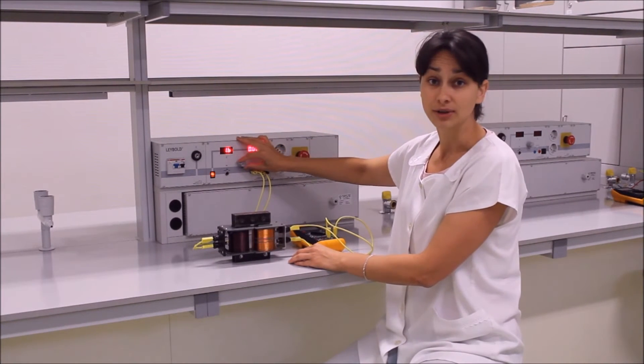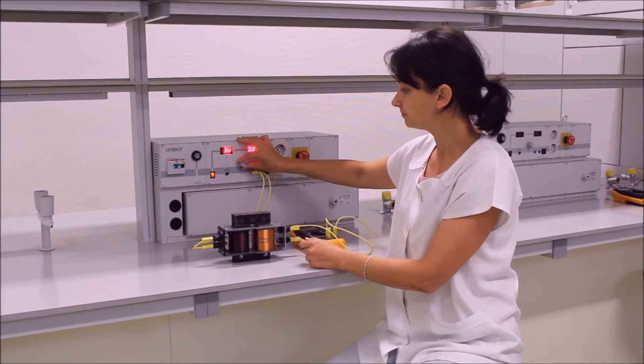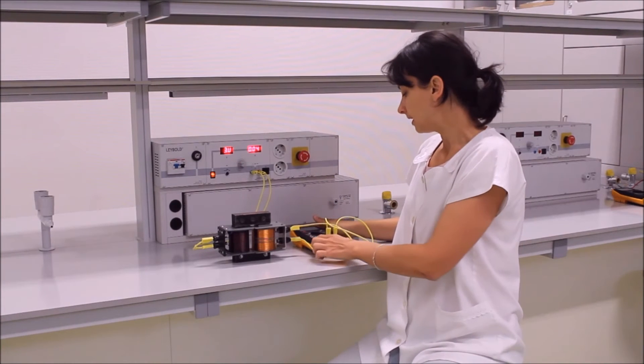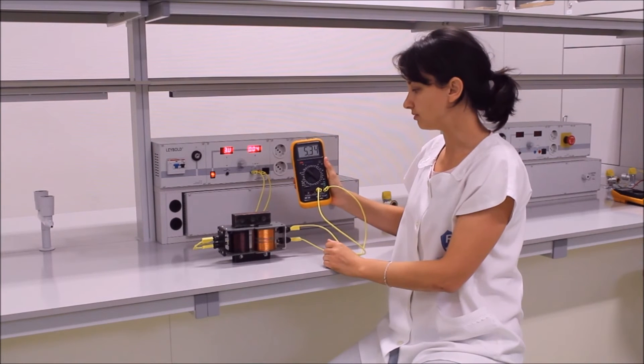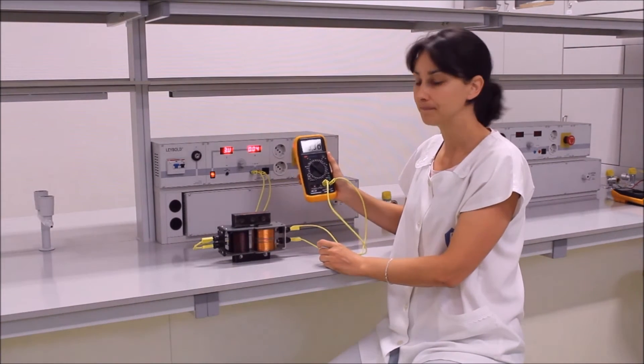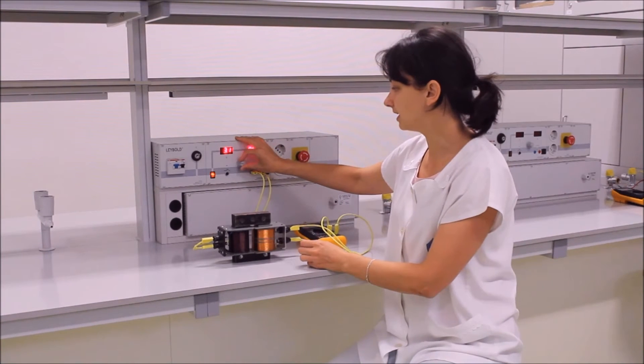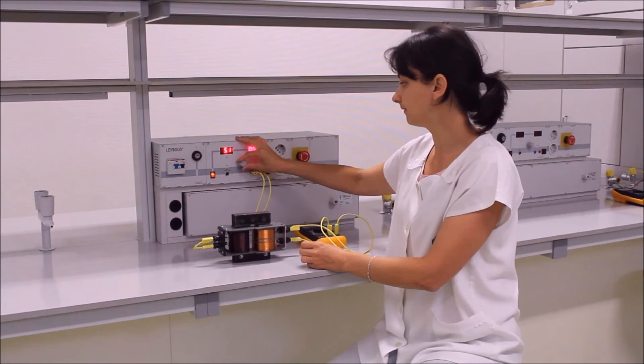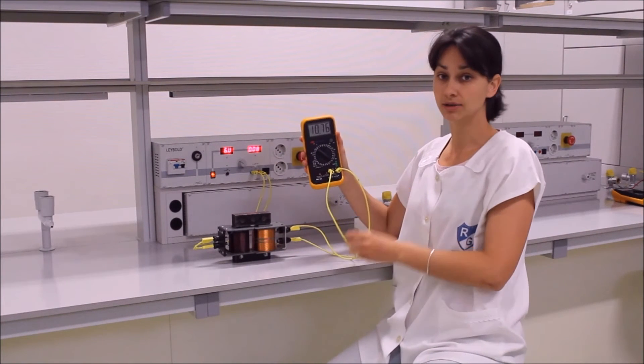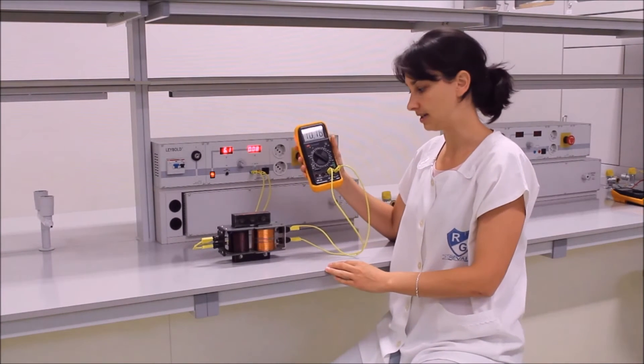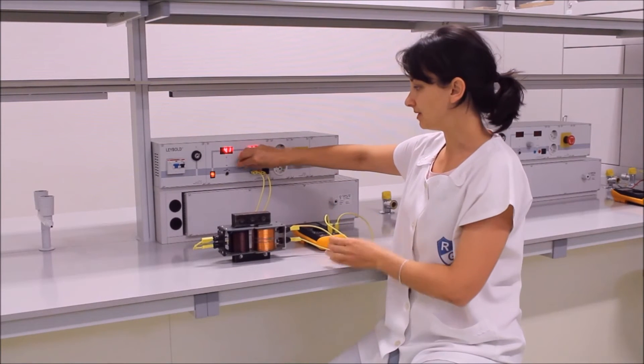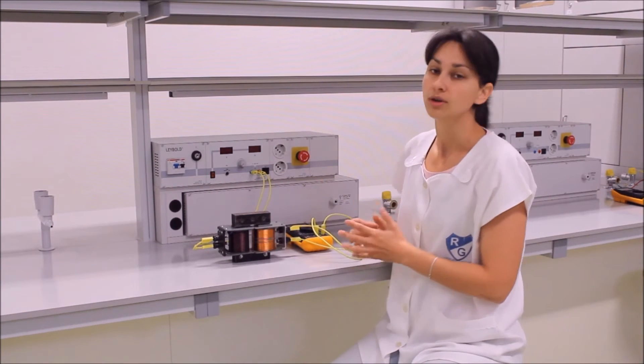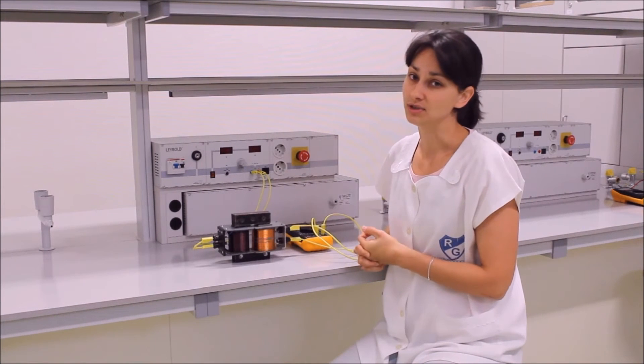A kijelző látható, a primer tekercsre kapcsolt feszültség nagysága 3,3 volt, a szekunder tekercsen mérhető feszültség pedig 5,33 volt. Ha változtatom a primer tekercs feszültségét, mondjuk 6 voltra, tehát kétszeresére, akkor a szekunder tekercsen 10,76 volt mérhető. Tehát megállapítható, hogy nagyobb menet számhoz nagyobb feszültség tartozik, és közel egyenes arányosság figyelhető meg a feszültségek és a menet számok között.